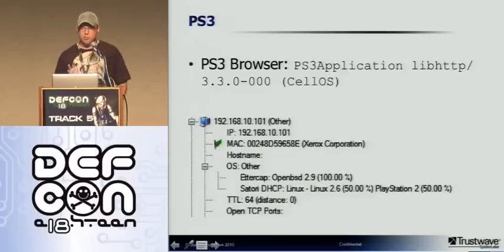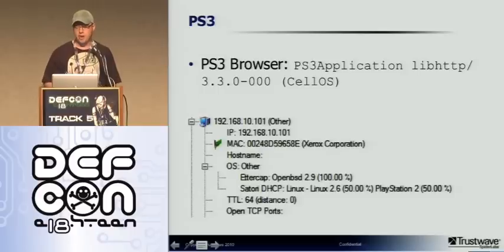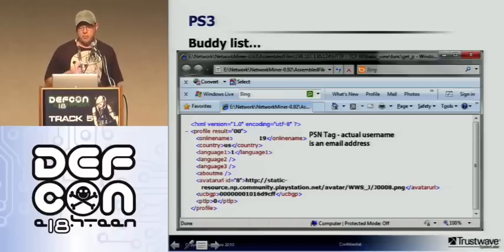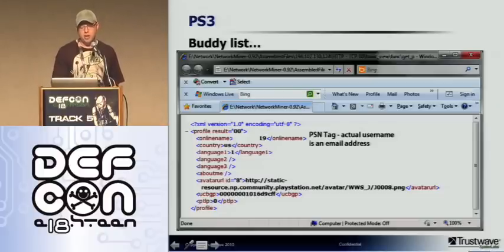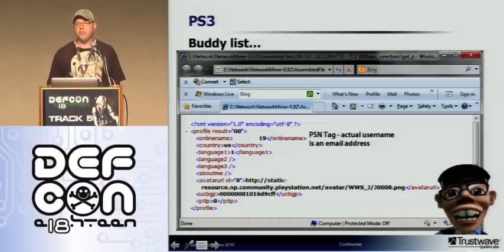The PS3 has a custom browser, which is really interesting. Network Miner does a good job of identifying it. If you have logs and see the PS3 application user agent 'libHTTP', that means you have a PS3 on that network. What might be useful for forensic investigation is the PS3 buddy list, which is transmitted over SSL. You can see a link with an avatar and the person's online name — I've obviously obfuscated it. There's also a profile image, and yes, that is an active image.